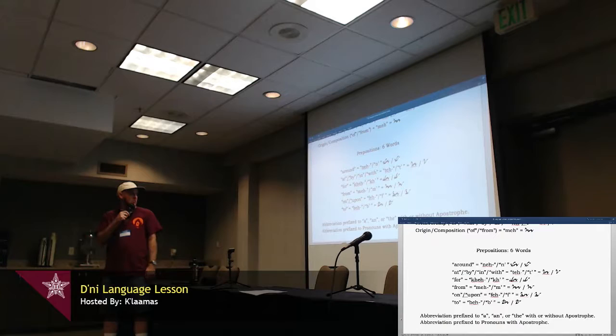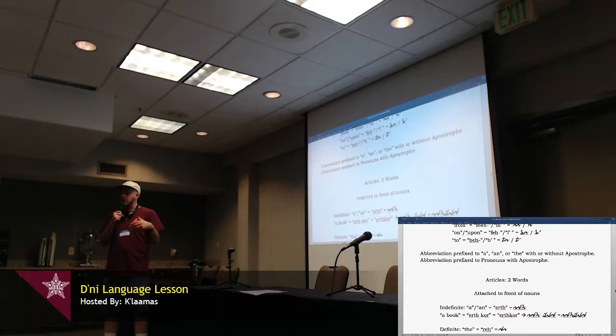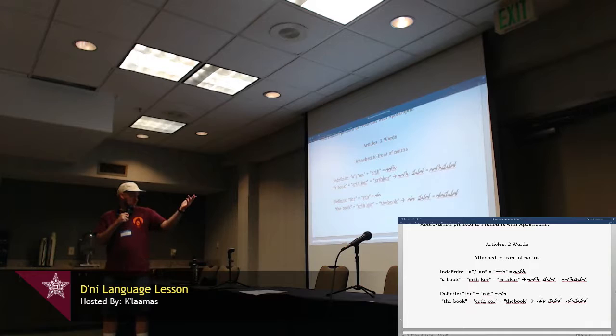And, if it's before an article, the articles are a, an, or the. If it's right before that, you can run it right into the word without any apostrophe. And, the articles, a, the indefinite, is a, or an, and the word is erth. So, a book would be erthkor, and you just run it together, into the same word. The definite article is the, or thee, and in English it's, er, D'ni it's re. So, the book, I made a typo here, it should be rekor, not erthkor. Erthkor, and run together in one word as well. The two articles can be attached to the word they proceed.